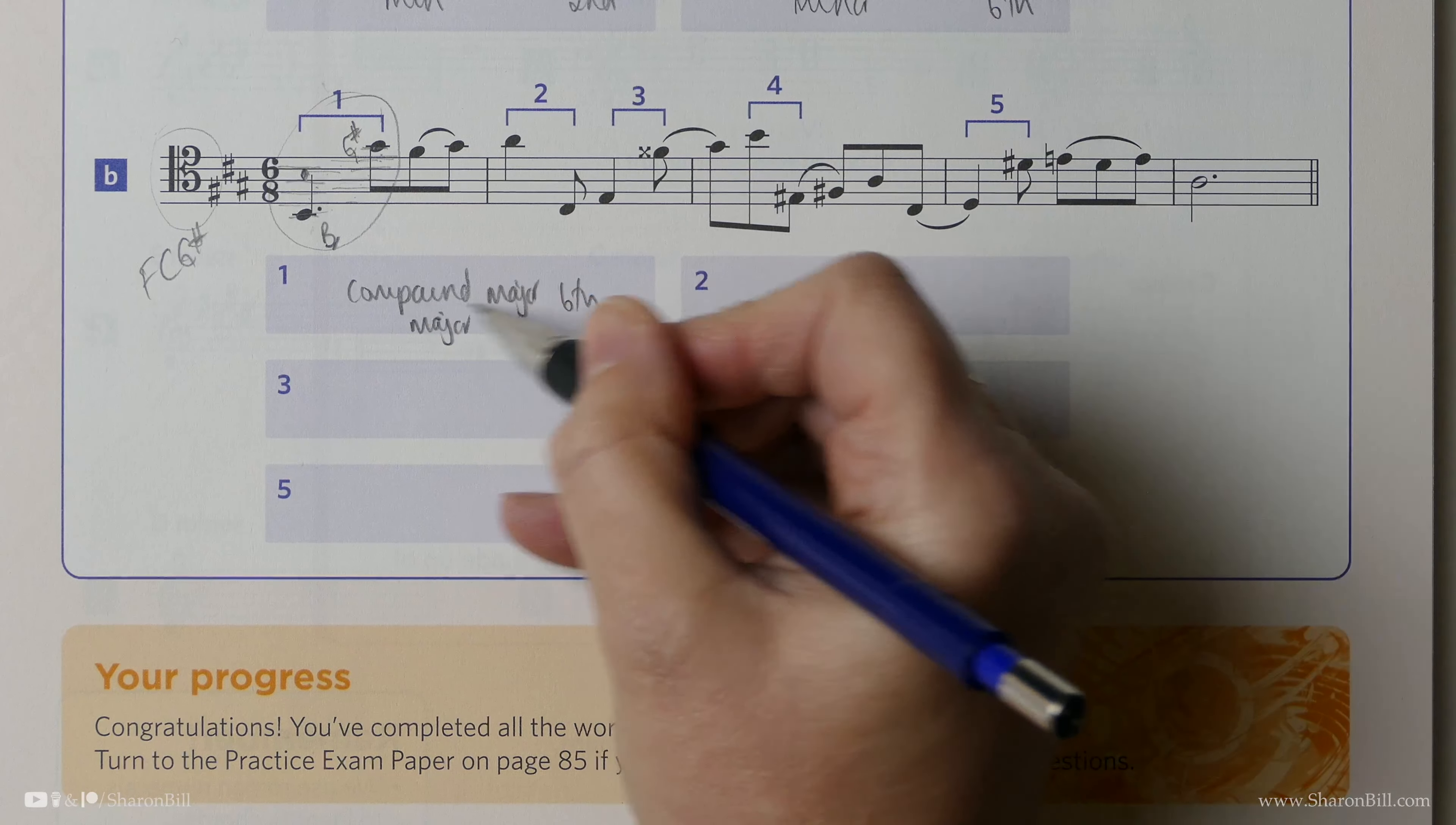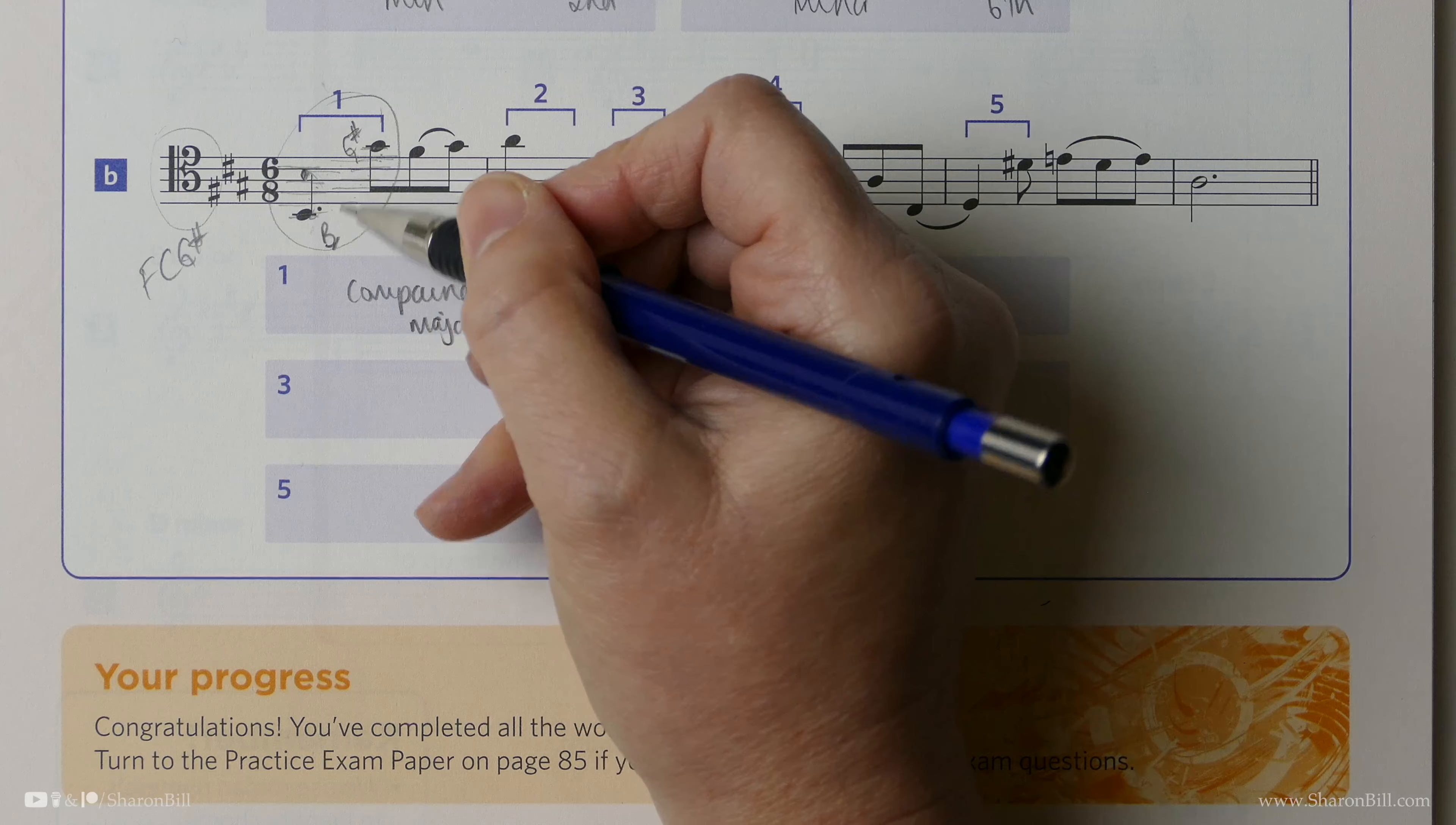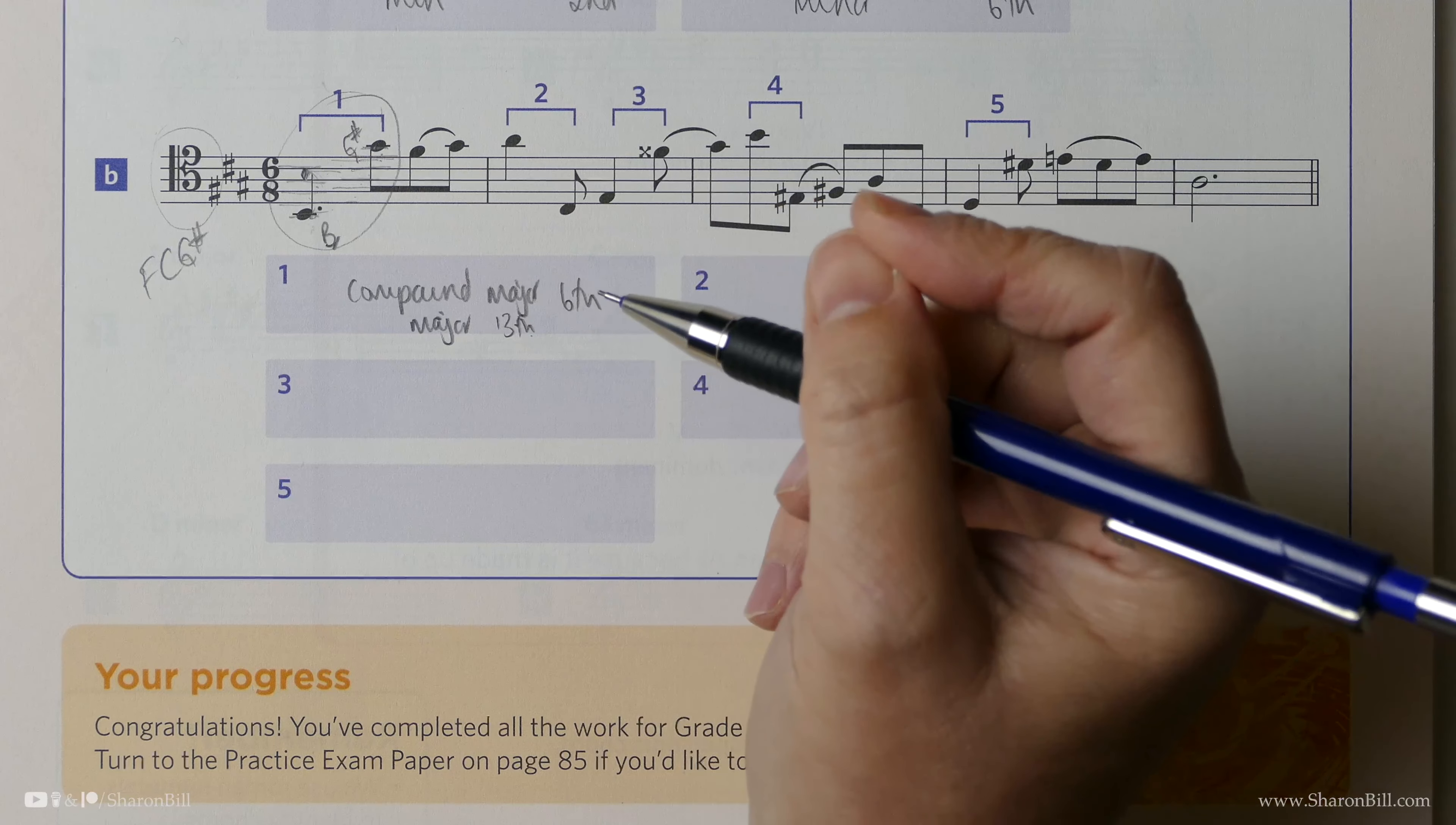I find it easier to do the compound version, first of all. One, because I find it hard to read down there. But also I need to know that fourths, fifths and octaves are perfect. Otherwise, you need to also remember that elevenths, twelfths and fifteenths are perfect.